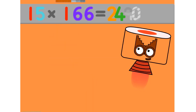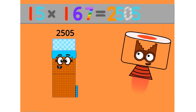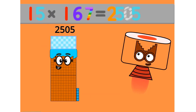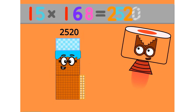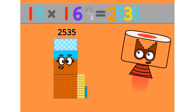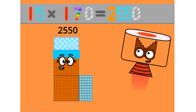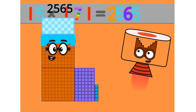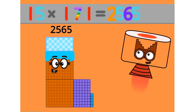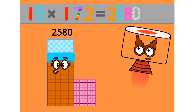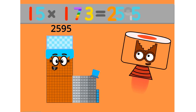15 times 166 equals 2490. 15 times 167 equals 2505. 15 times 168 equals 2520. 15 times 169 equals 2535. 15 times 170 equals 2550. 15 times 171 equals 2565. 15 times 172 equals 2580. 15 times 173 equals 2595.